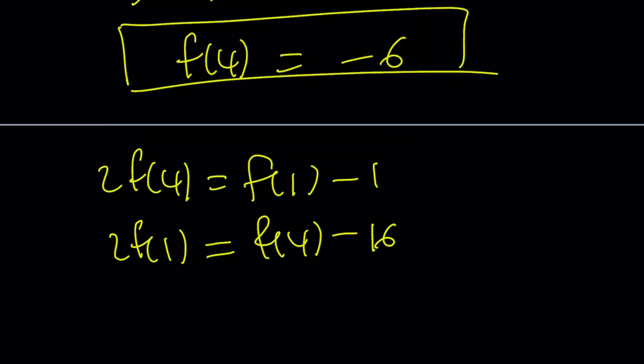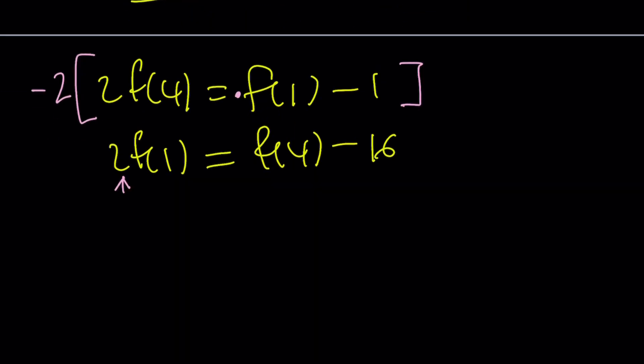The coefficient of f of 1 here is 2, and the coefficient of f of 1 here is 1. So I need to make him disappear, so I will multiply the top equation by negative 2.